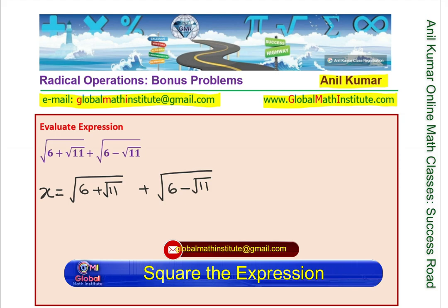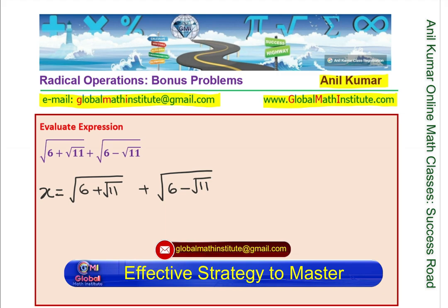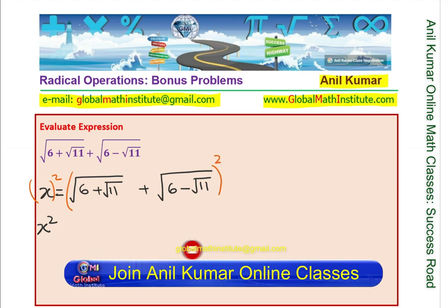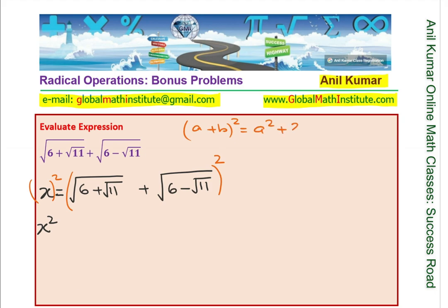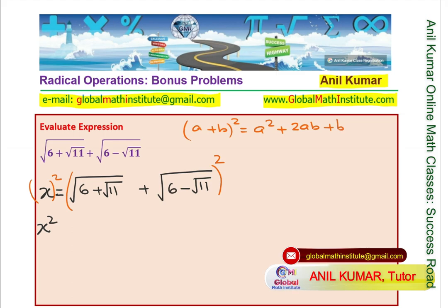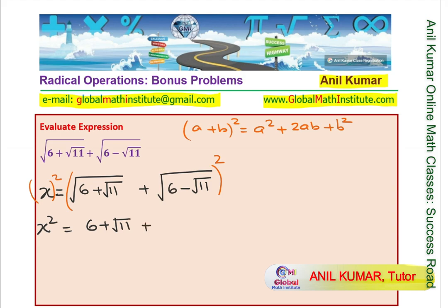What we want to find is the value x for the given expression. If I square both sides, I get x squared. Basically what I'm doing is squaring both sides. You remember a plus b whole square is a squared plus 2ab plus b squared — let's expand using that.